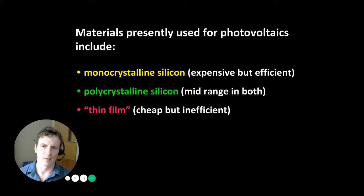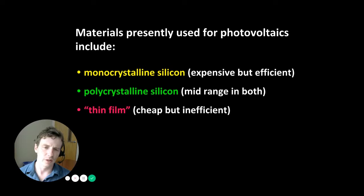These three materials range in both efficiency and cost. The rule of thumb is that the most efficient are also the most expensive — that would be monocrystalline silicon. The least efficient are the cheapest — those are thin film. In the middle, polycrystalline silicon is mid-range in both efficiency and cost.